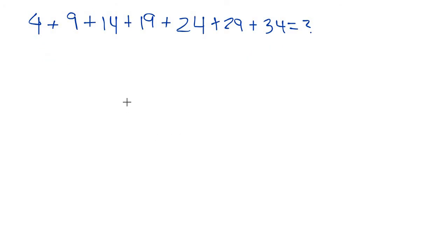So we can use this to our advantage, because we know that the average times 7 is the sum of all of these. So we can just write this as 34 plus 4 over 2, which is the average...